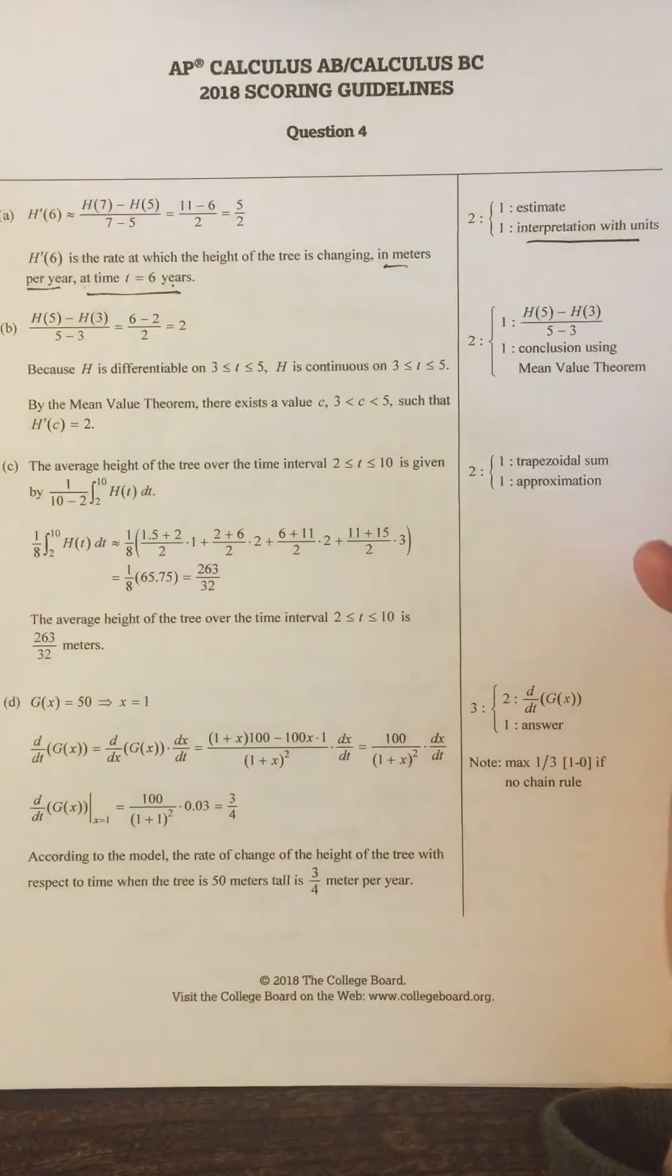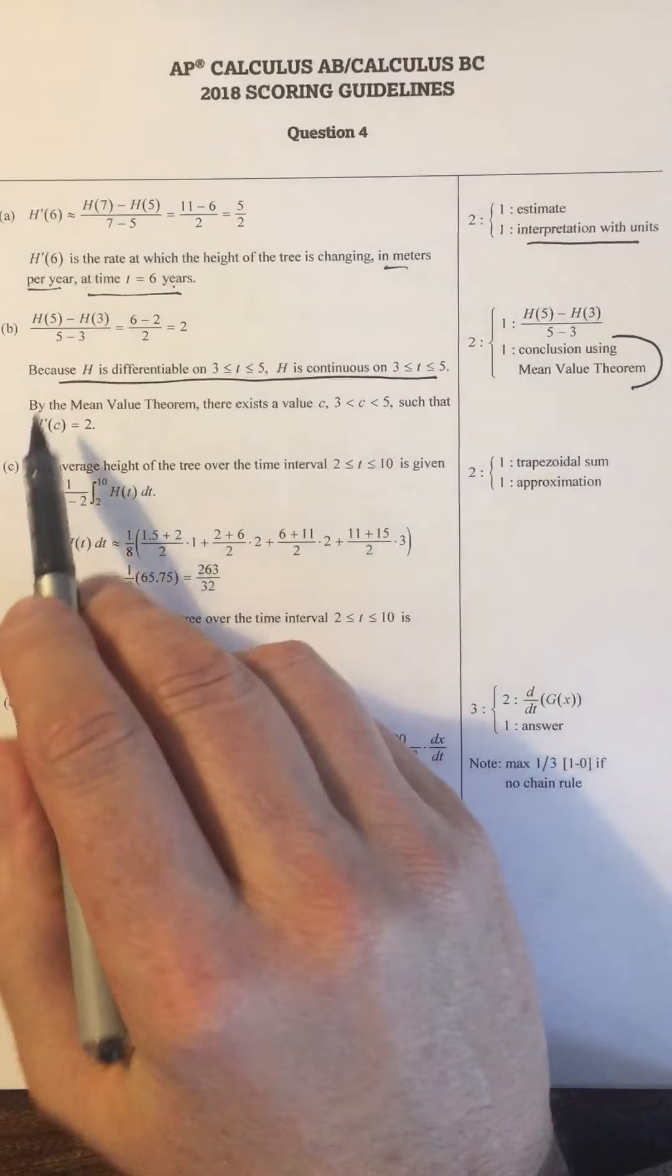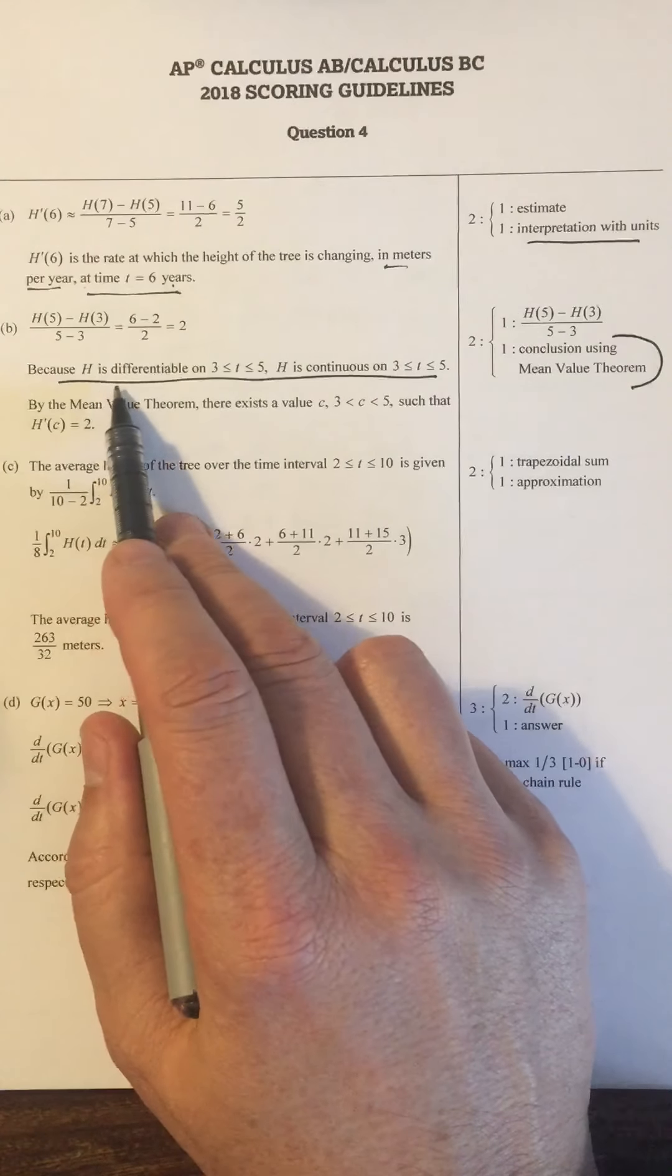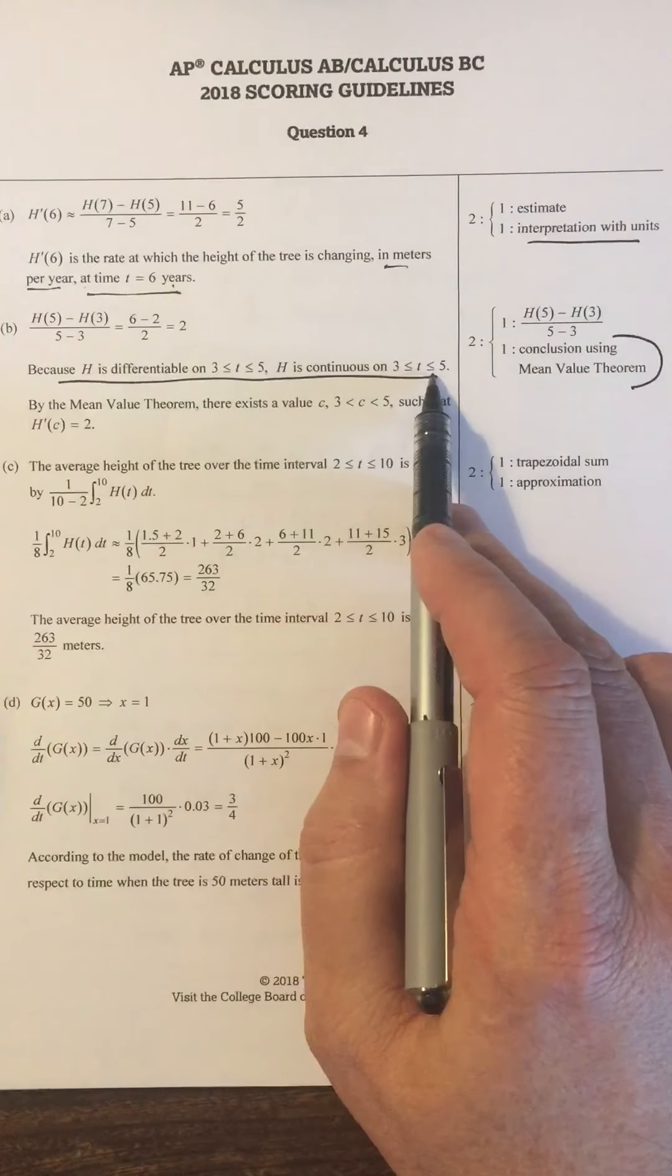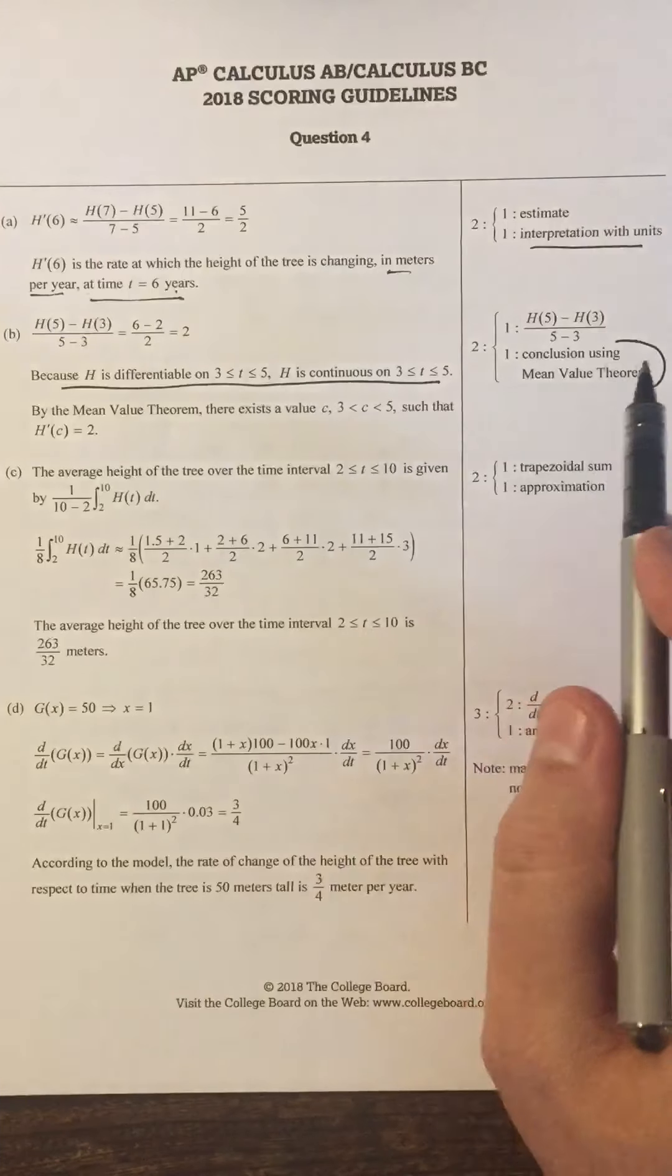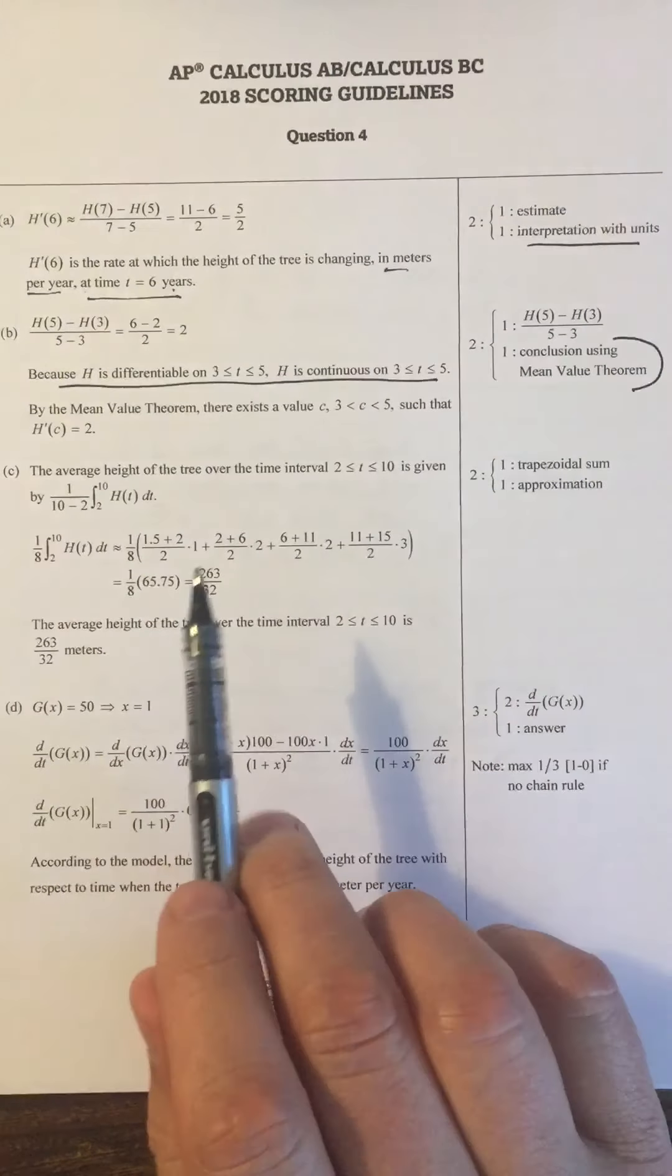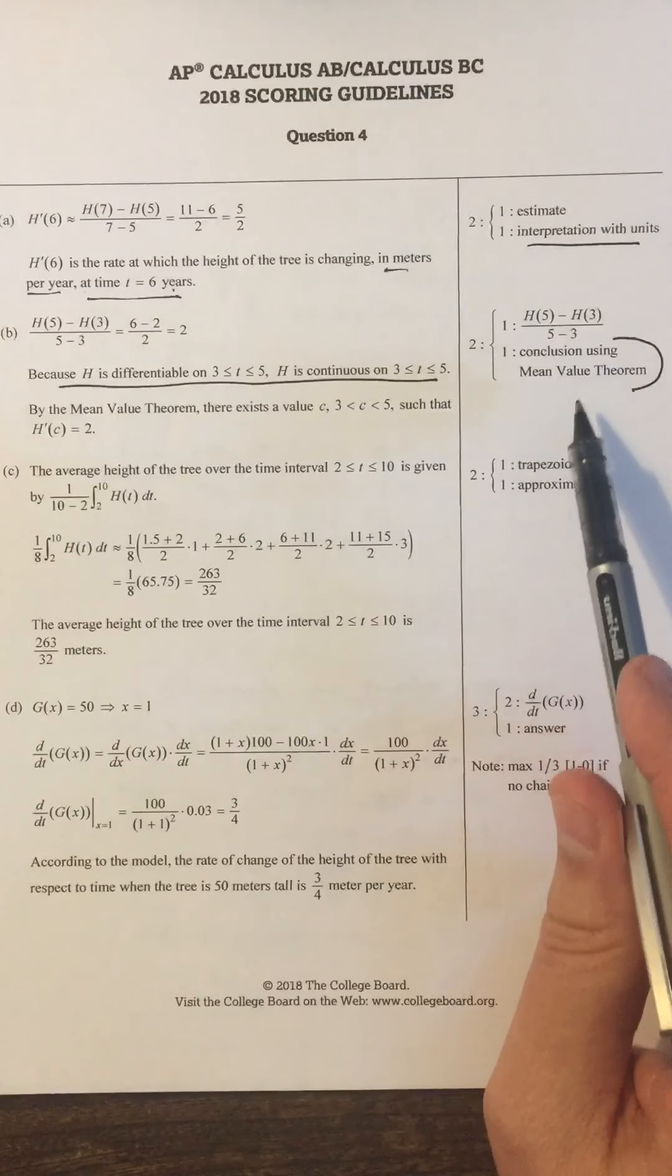The thing to mention on part B: when they say this conclusion using mean value theorem, if you don't state the hypotheses as they do here, so they don't do this thing that I did. It's continuous for all real numbers and therefore, in particular, continuous on the interval three to five. They just said because H is differentiable on three to five. Therefore H is continuous on three to five. But you have to state that. If you don't state that H is differentiable and continuous on the appropriate intervals, then you're not going to get this point at all. Even if you use mean value theorem, if you didn't say differentiable and continuous, in particular continuous, because the problem said differentiable, you have to say continuous in order to have met those criteria for mean value theorem and be able to get that point.